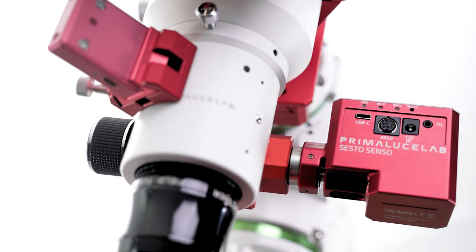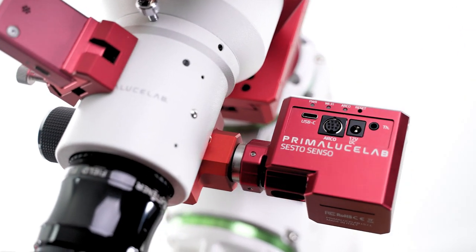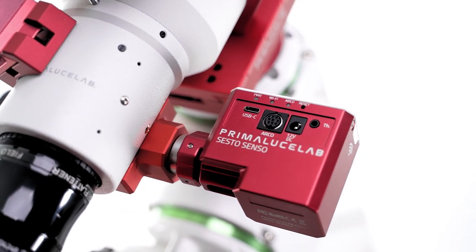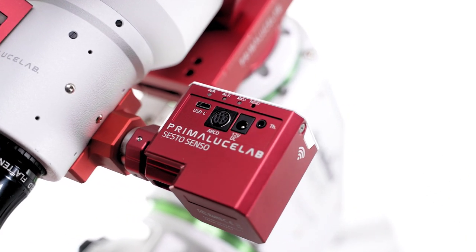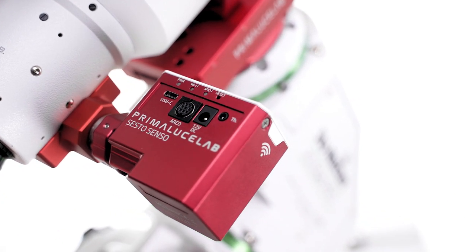Instead of connecting the coarse knob side requiring an external bracket, Sesto Senso connects to the other side of the focuser by replacing the fine and coarse knobs.